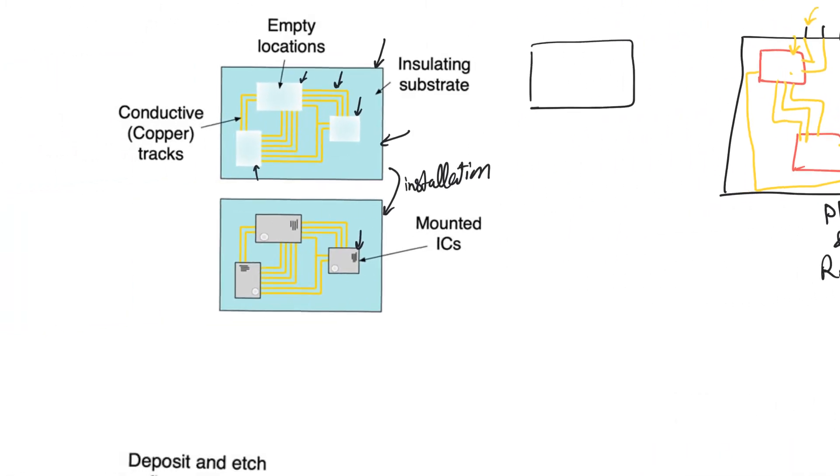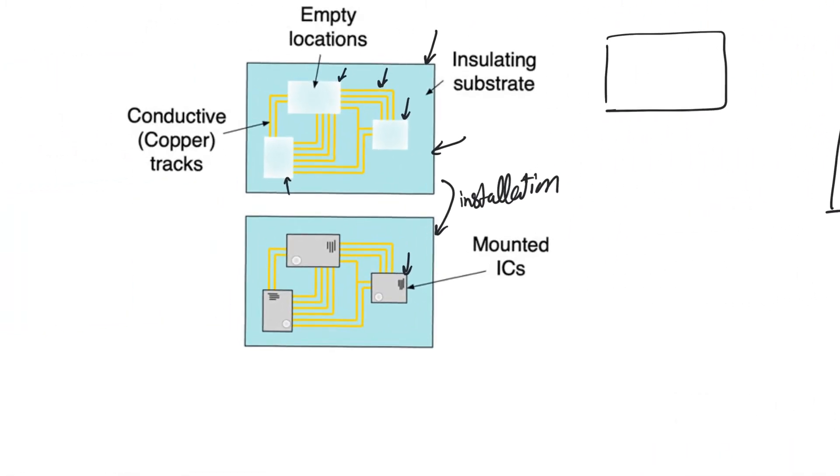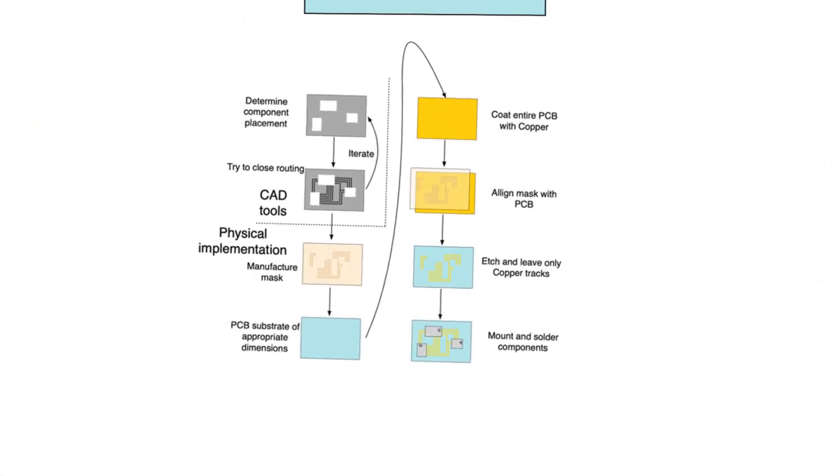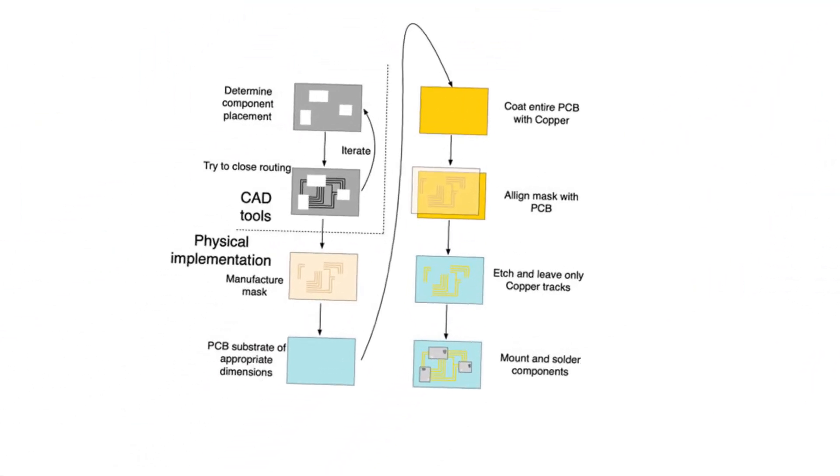Once you have determined the routing tracks that you need, let's assume that they are this in this case, then go to the fabrication stage, where you fabricate the PCB. What's surprising here is that the fabrication stage is also very similar to photolithography. The design flow is very similar to ASIC design flow, and fabrication is very similar to photolithography, because that's what you are doing, basically. You are creating conductive tracks on an insulating substrate.